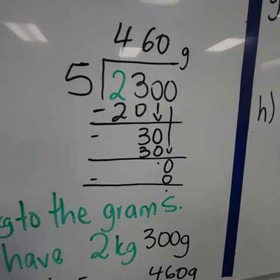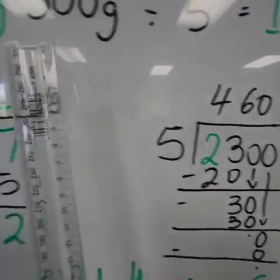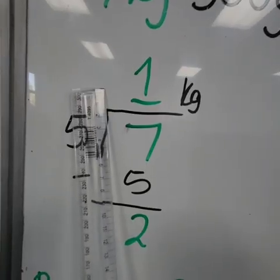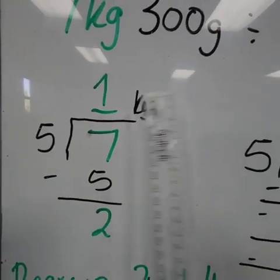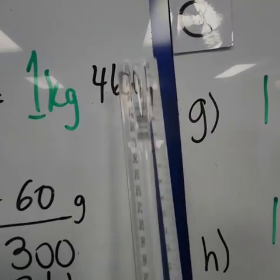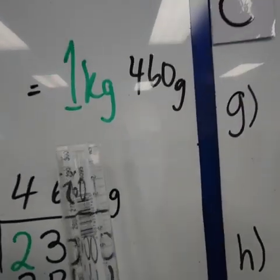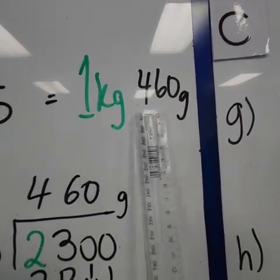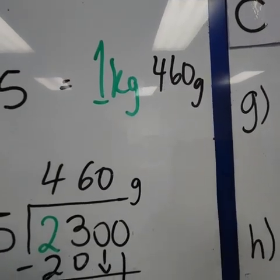And now we have our grams. And we have the answer to our kilograms. And then we compound them together. And they will give us 1 kg, 460 grams, or 1 kg and 460 grams.